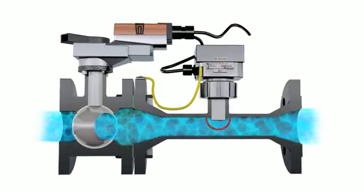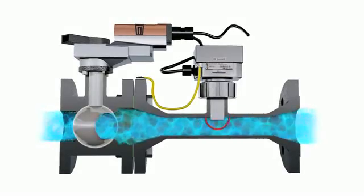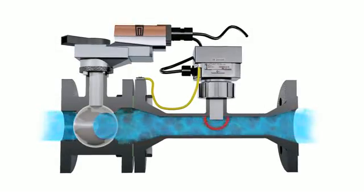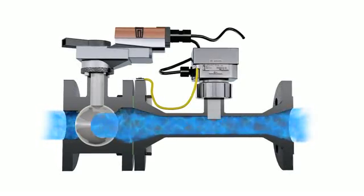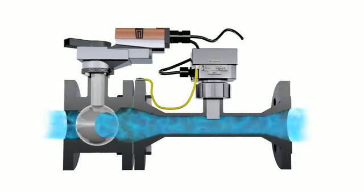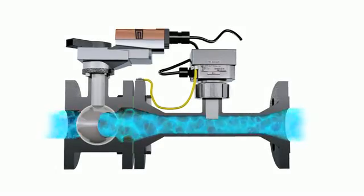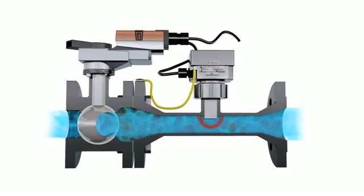Linear flow characteristic is used when controlling applications different than cooling and heating coils, like bypass control. The EPIV is a valve designed specifically for HVAC applications.